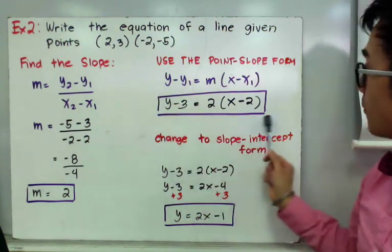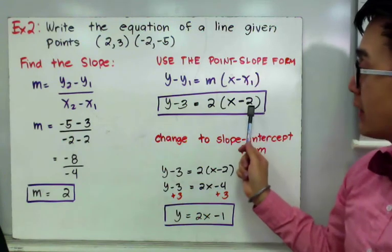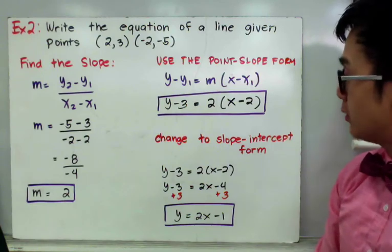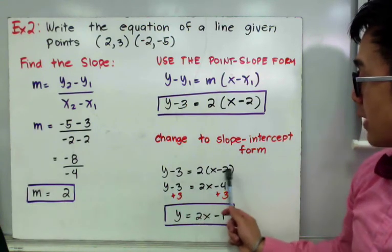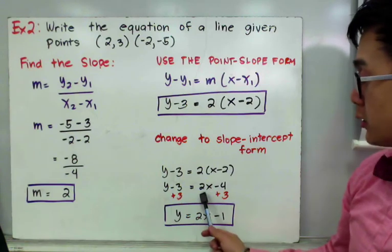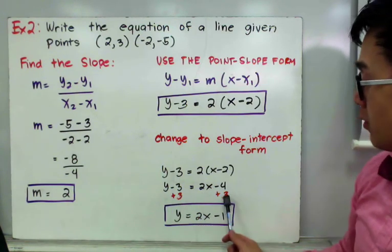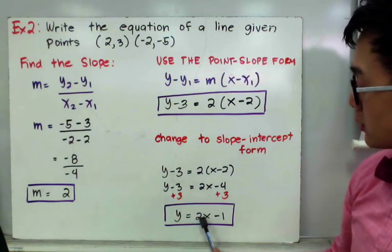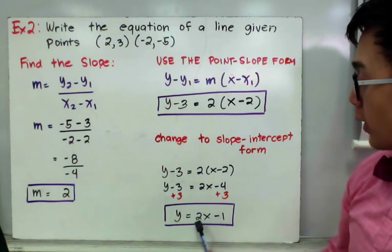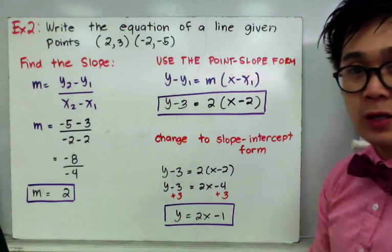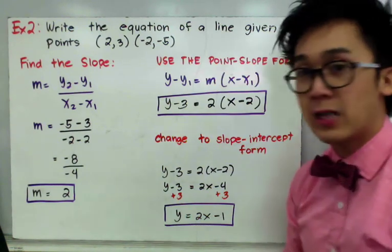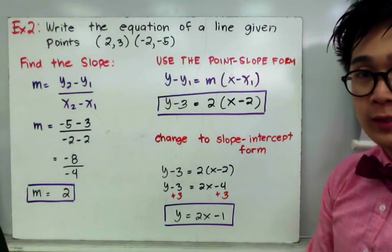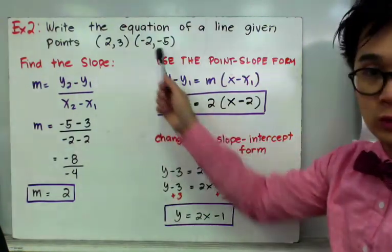To convert into the slope-intercept form, distribute: y minus 3 equal to 2 times x minus 2 becomes 2x minus 4. Then add 3 on both sides to get y equal to 2x minus 1, where 2 is the slope and negative 1 is the y-intercept. That is how we use the point-slope form to write the equation of a line given two points or a point and a slope.